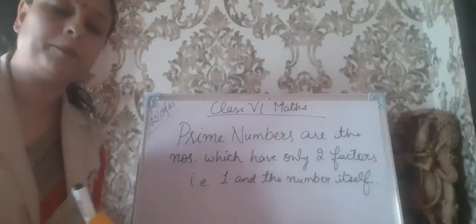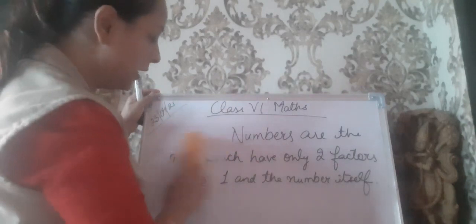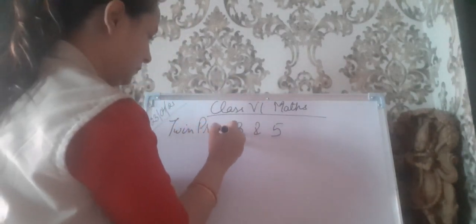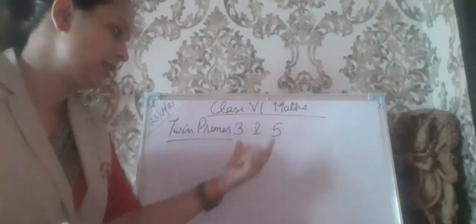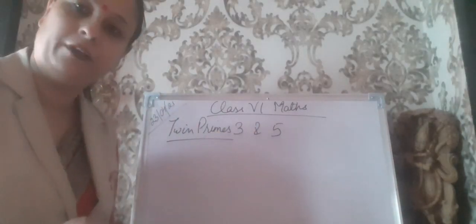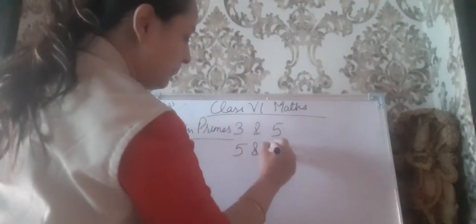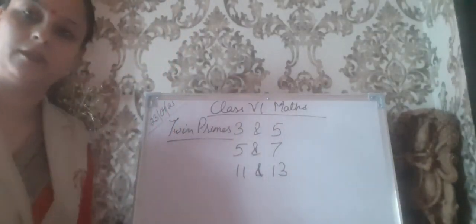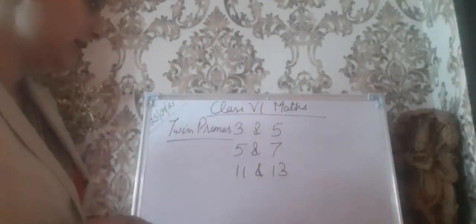What are twin primes? Twin primes are numbers which have a difference of 2 and both of them are prime numbers. Like 3 and 5 — the difference is 2, and both are prime numbers, so 3 and 5 are twin primes. Like 5 and 7, like 11 and 13 — these all are twin primes.